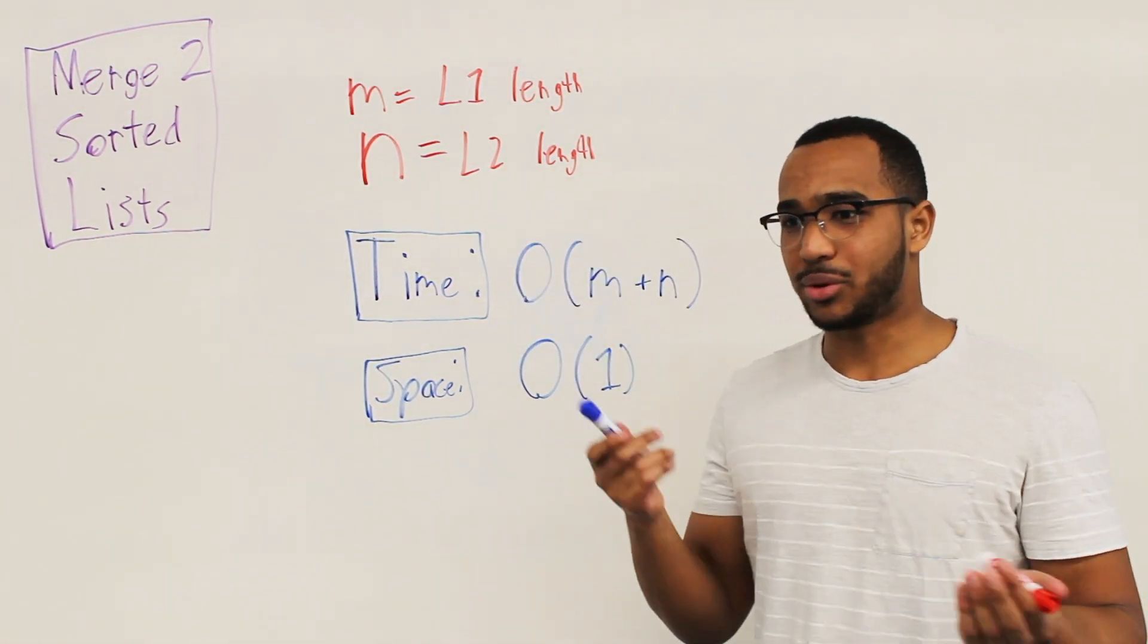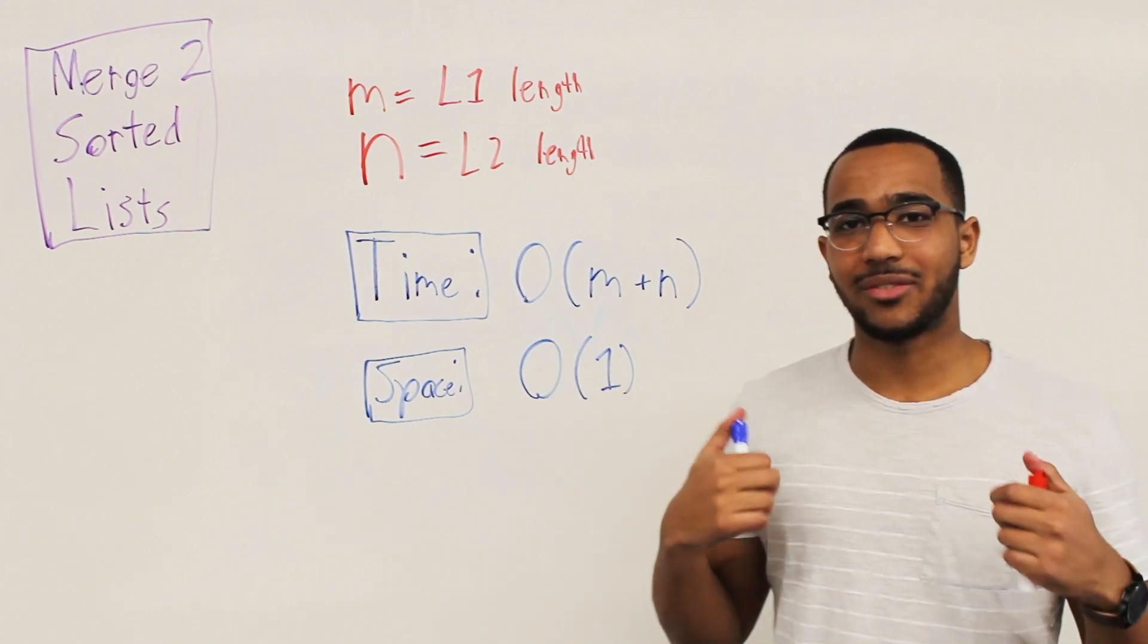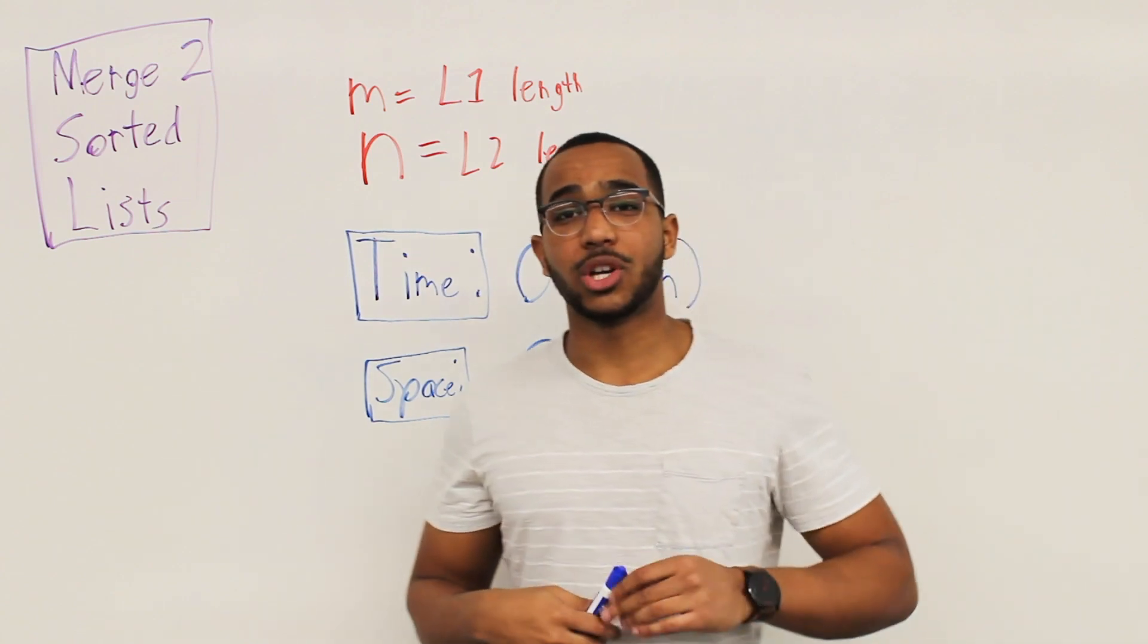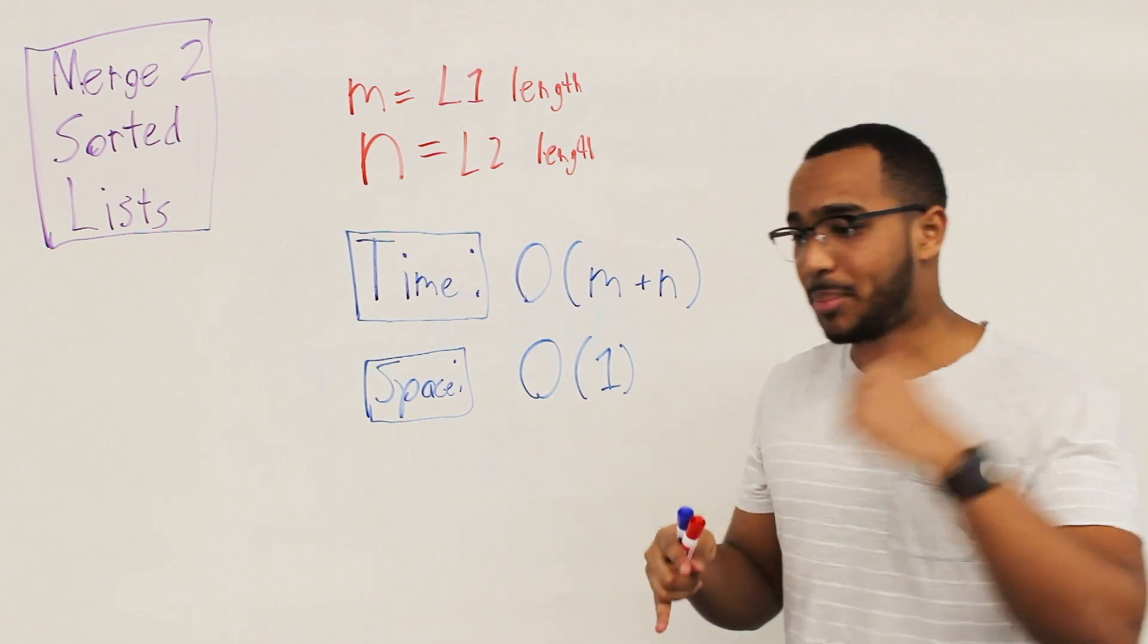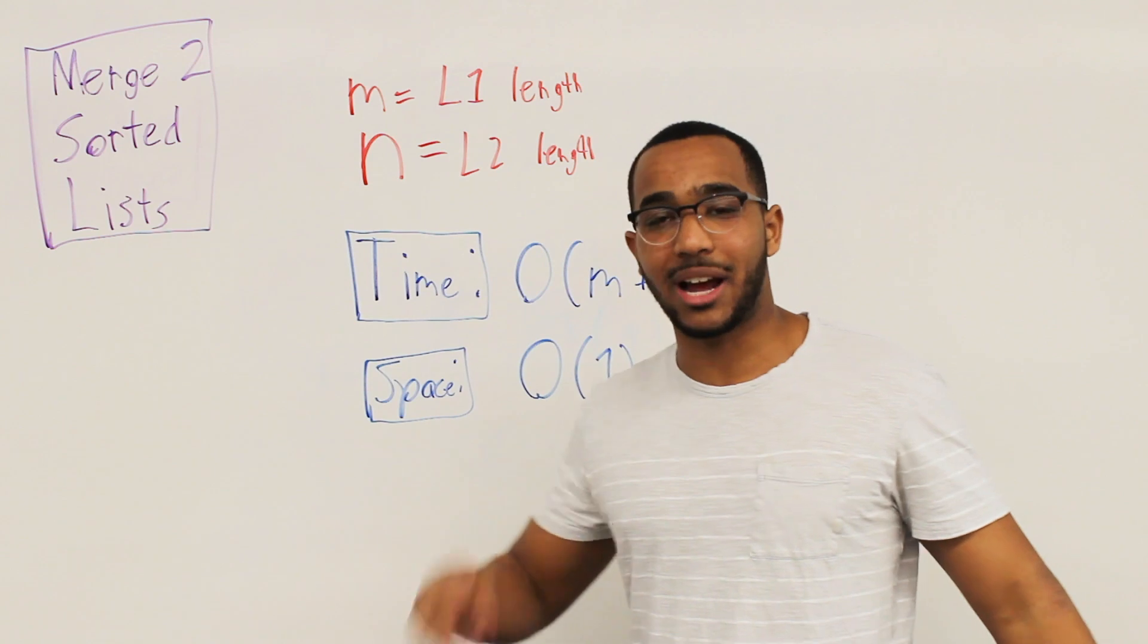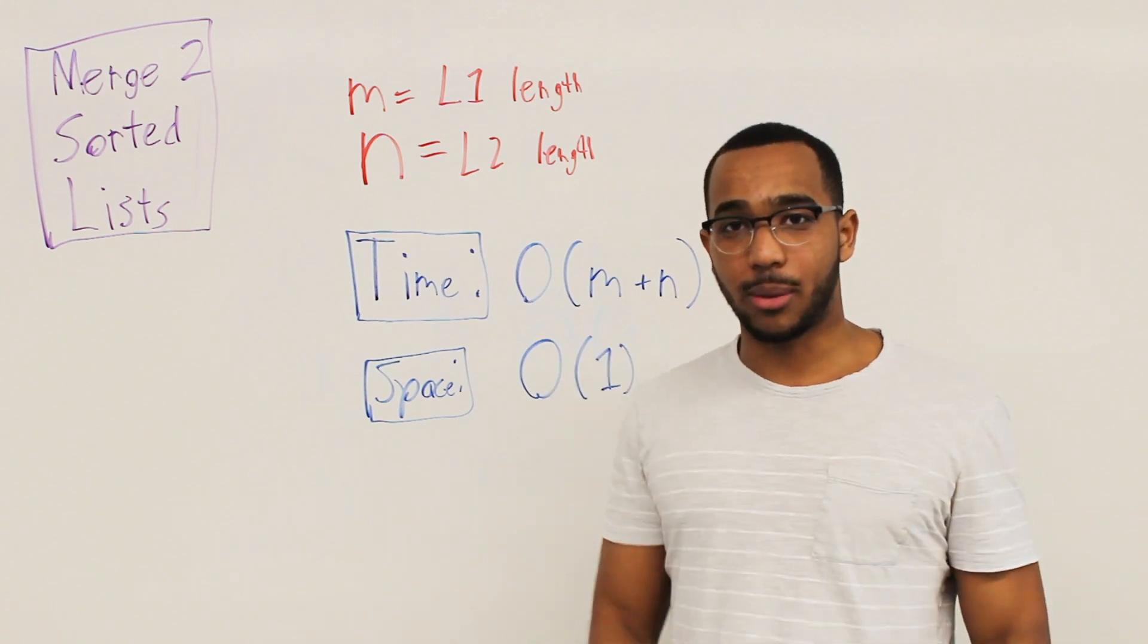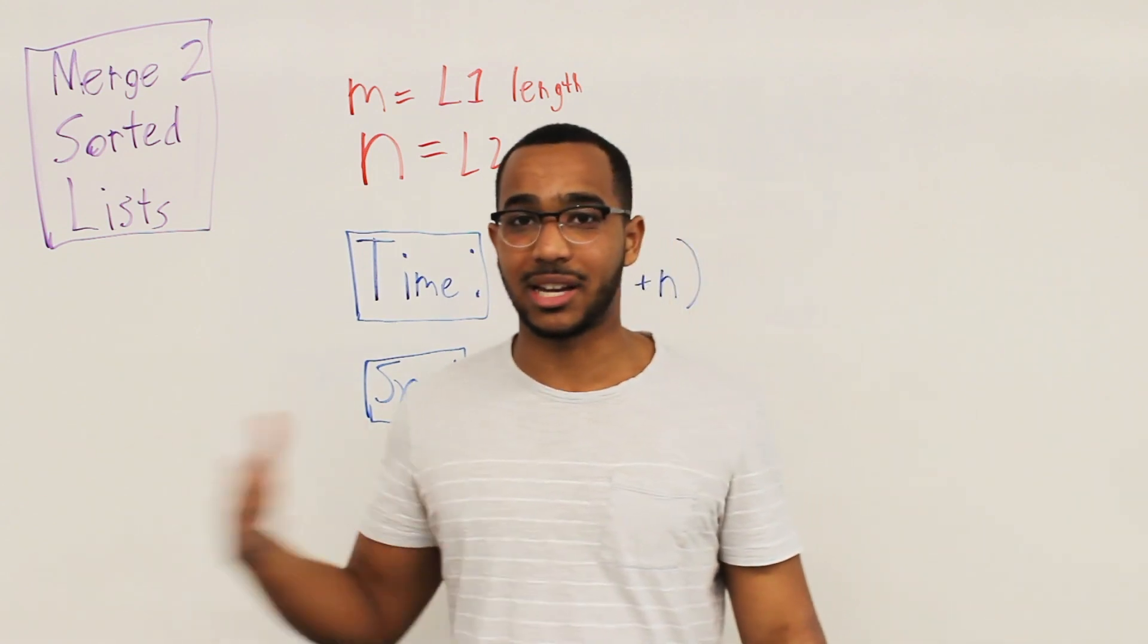We're going to be using constant space. We're going to be using constant space because all we're doing is a shifting of pointers, jumping around, doing our little rewiring, and then getting out of there. We're not creating a whole new array. We're not creating new nodes. We're not creating an array. We're not creating anything that will scale as our input gets arbitrarily large, which is what big O is about, what these complexities and asymptotic analysis is about.